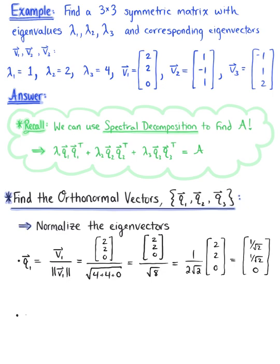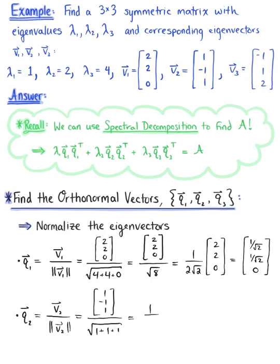To find vector q sub 2, we normalize eigenvector v sub 2. The eigenvector v sub 2 has components 1, negative 1, 1, and dividing by its length — the square root of 1 plus 1 plus 1 — gives us the scalar multiple 1 over root 3, multiplied by the vector with components 1, negative 1, 1. Distributing, we get q sub 2 equal to 1 over root 3, negative 1 over root 3, 1 over root 3.